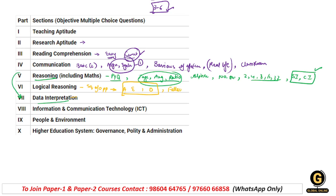Uske baad aap logon se fallacy se related question pucha gaya tha. Is baar NTA kya kar raha hai - bahut saare types ki fallacies hoti hain, basically formal aur informal hoti hain, lekin unhe further bahut zyada parts mein divide kiya jaata hai. Pehle NTA kuch basic cheezein follow karta tha, lekin is baar jitni bhi fallacies hain lagbhag sab add kar di gayi hain. Agar aapne already fallacies padhi hain toh hi aap new points par jaayega, otherwise previous year questions ke basis par bhi aap achha score kar sakte ho.